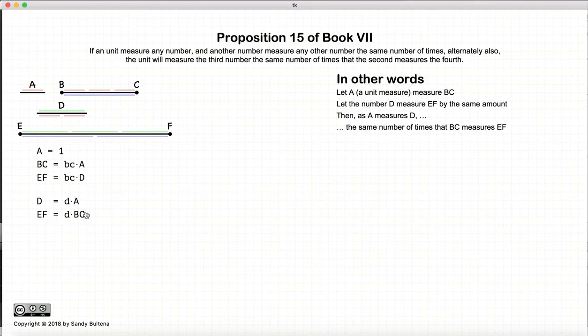And what this is basically saying is that N times D is equal to D times BC. However, at this point, Euclid is not actually using multiplication. He's just talking about measuring, which appears to be a slightly different operation than multiplication. Anyway, carrying on.